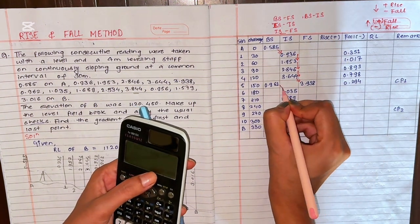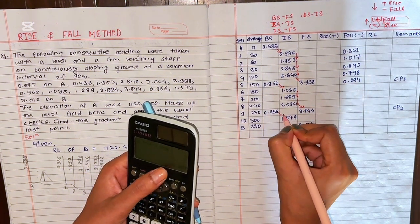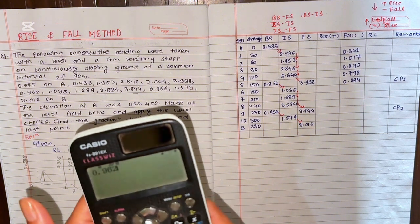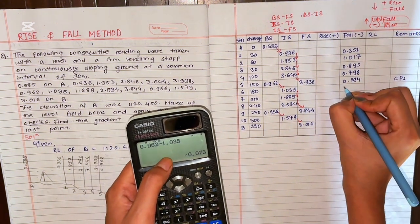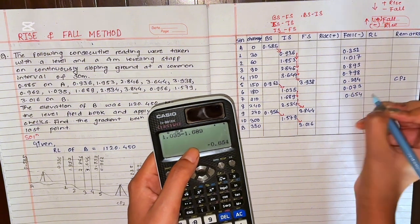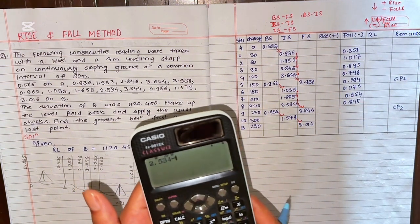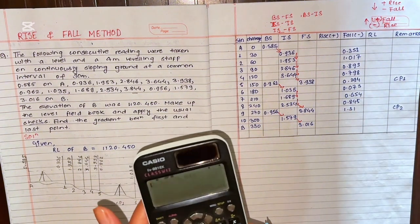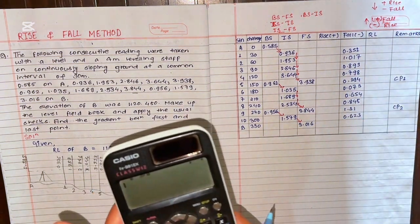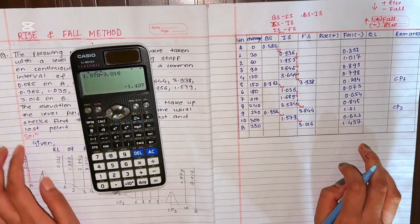Continuing with the second instrument setup: 0.962 minus 1.035 = 0.073 fall. Then 1.035 minus 1.689 = 0.654 fall. Then 1.689 minus 2.534 = 0.845 fall. Then 2.534 minus 3.844 = 1.310 fall. For the third setup: 0.956 minus 1.579 = 0.623 fall. Finally, 1.579 minus 3.016 = 1.437 fall. All values are falls, as expected for this sloping ground.